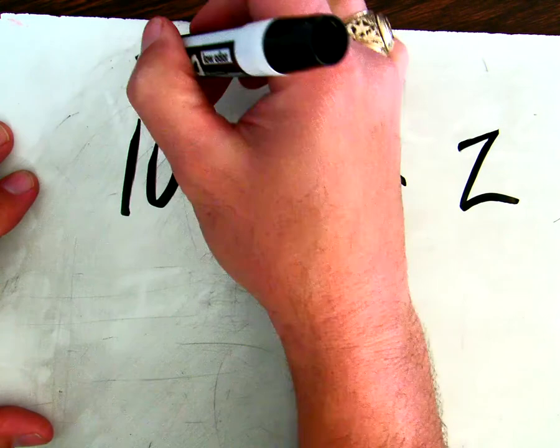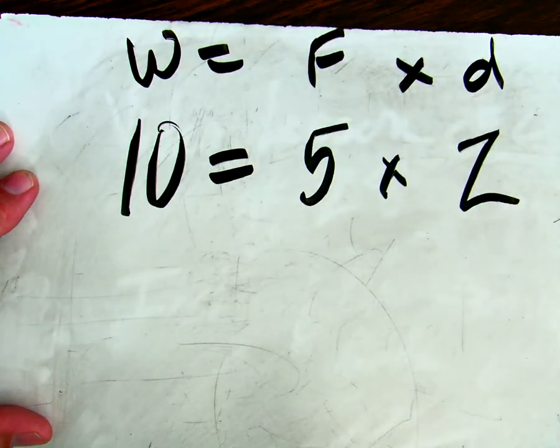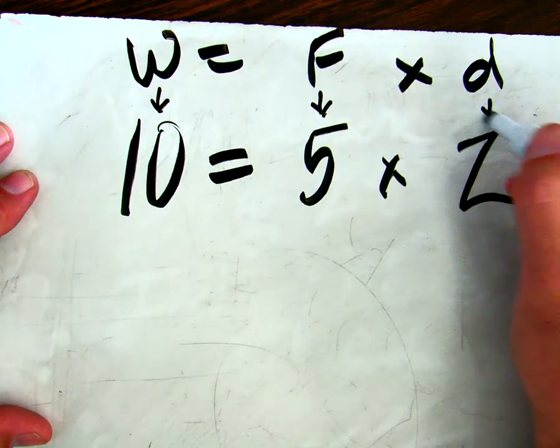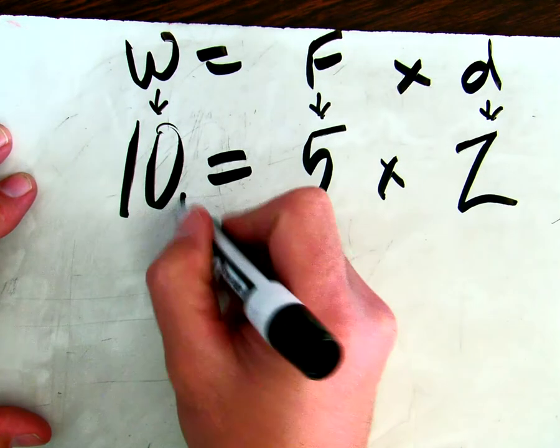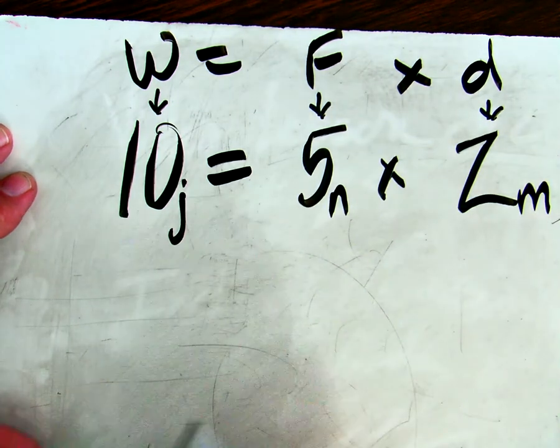Okay, now we're going to look at this in terms of work equals force times distance. So if we say 10 is our work, our force is 5, and our distance is 2, we could say this is joules, this is newtons, and this is meters, right?